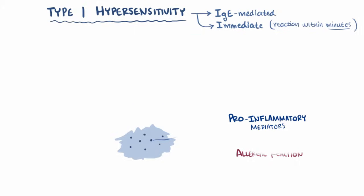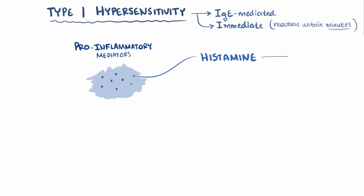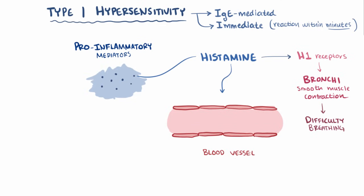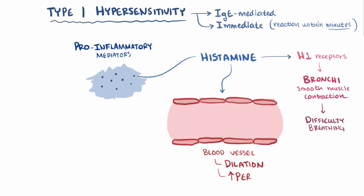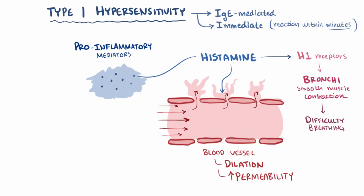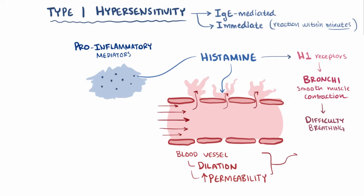One of the major mediators released in an allergic reaction is histamine. Histamine binds to H1 receptors and causes the smooth muscles around the bronchi to contract, which means the airways get smaller, making it more difficult to breathe. It also causes blood vessel dilation, and increased permeability of the blood vessel walls, meaning that, while blood vessel diameter increases and blood flow to the affected area increases, fluid is allowed to more easily leak out the blood vessel walls and get into the interstitium, the spaces between the cells, which causes edema and swelling, and urticaria, or hives.